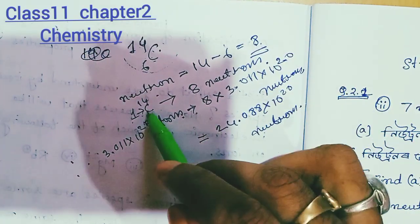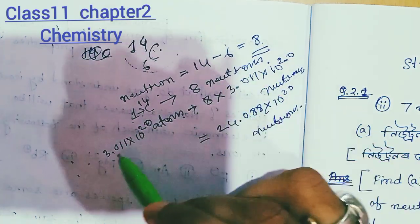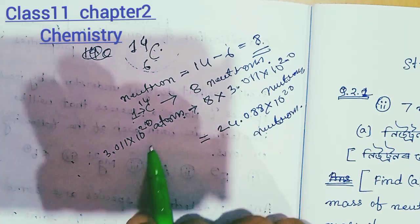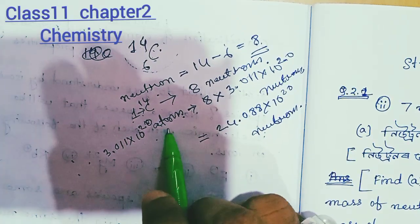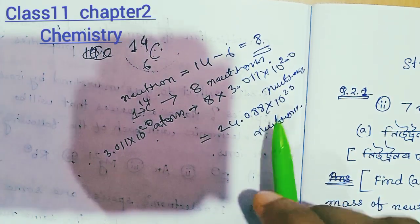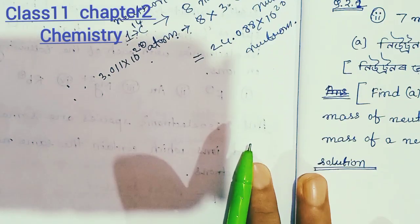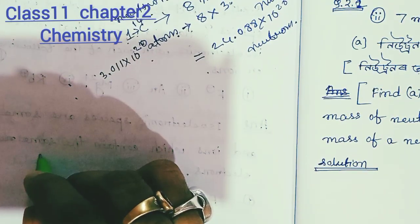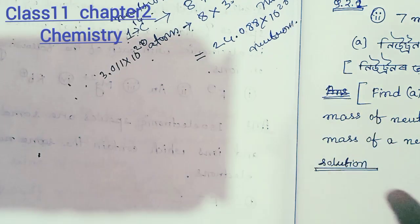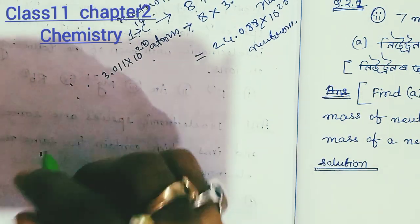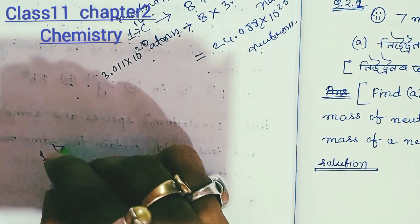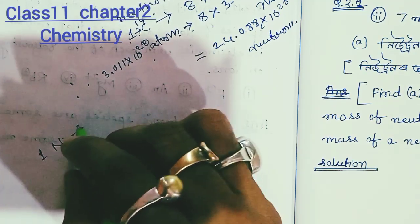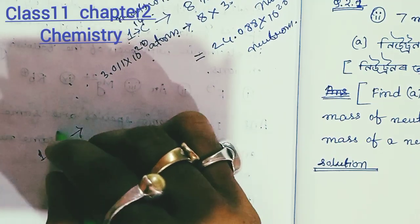This is Carbon-14 with 3.011 × 10²⁰ atoms from 7 mg. These are not neutrons by themselves — the total neutron count is 24.088 × 10²⁰ neutrons. Next slide: this is the neutron mass.